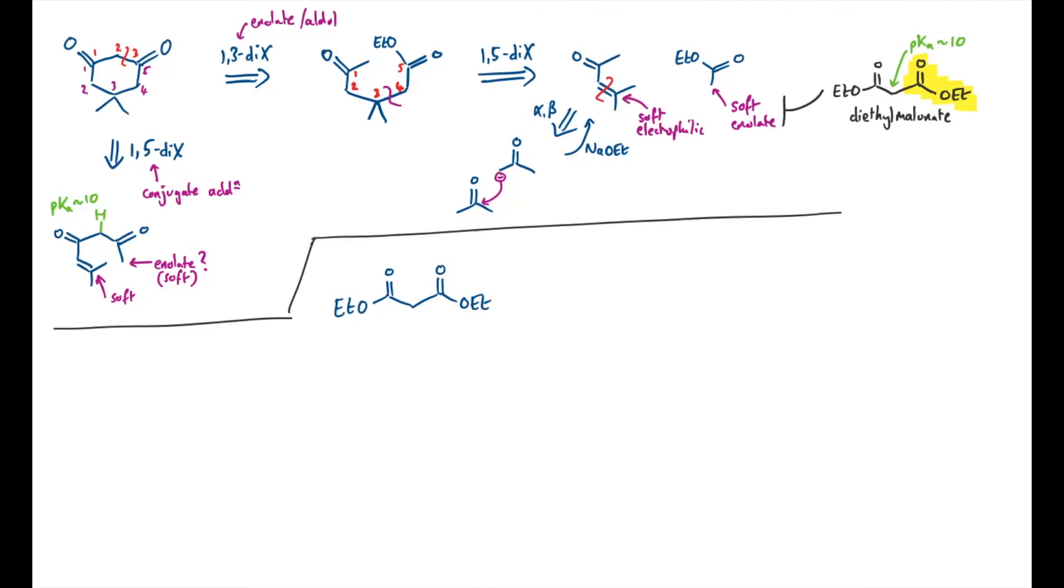So starting with diethyl malonate I need to deprotonate it with some sort of base and a good choice here would be EtO minus the ethoxide ion. This has a pKaH of about 15 whereas the protons we're about to deprotonate have a pKa of about 10 so there'll be some equilibrium here and that will turn out to be tolerated by the rest of this synthesis.